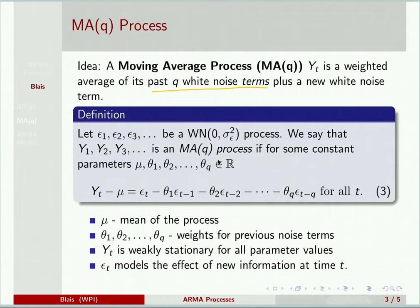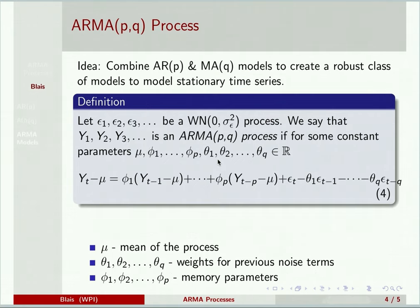So having these two types of models for stationary processes suggests the idea: can we use them together and get a more robust model for stationary time series? And so that's how we arrive at the ARMA process, the autoregressive moving average process. So we're combining AR(p) and MA(q) models to create this more robust model for the modeling of stationary time series.